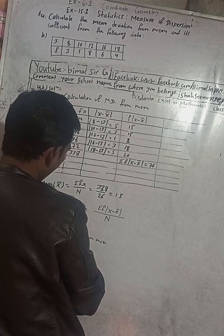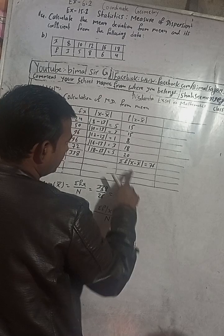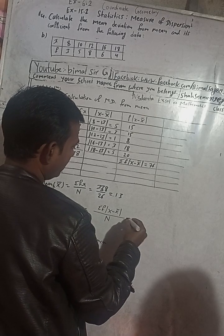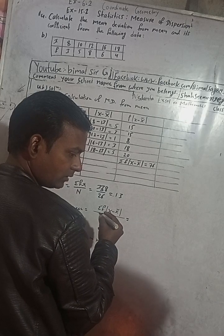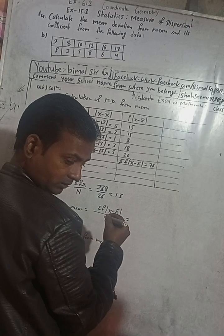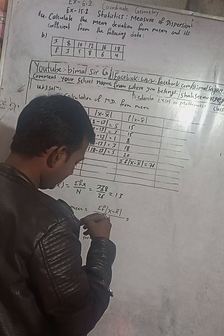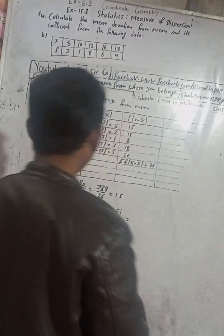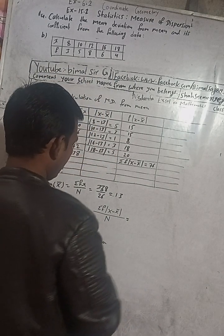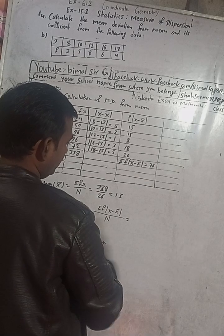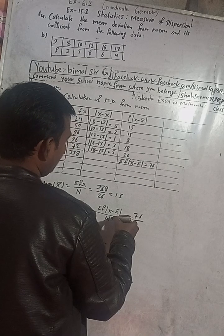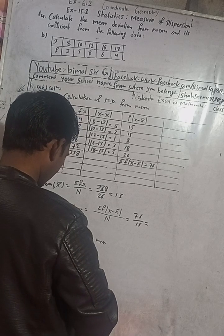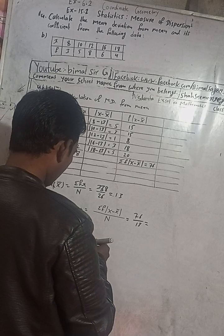Now we can calculate the mean deviation from mean. The formula is: Mean Deviation = summation of f|x - x̄| divided by capital N. The summation of f|x - x̄| is 76. Initially dividing 76 by 13 gives 5.8461 — but wait, we need to verify the value of N.